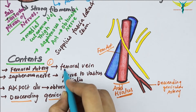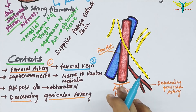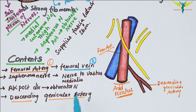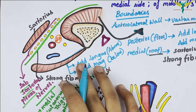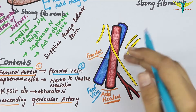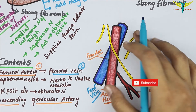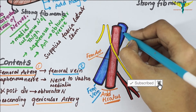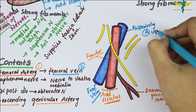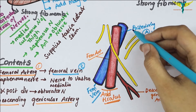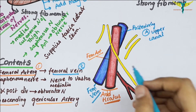The femoral vein lies posteriorly to the femoral artery in the upper part of the canal, and while traveling downwards it becomes lateral to the artery in the lower part of the adductor canal.